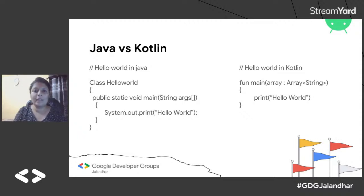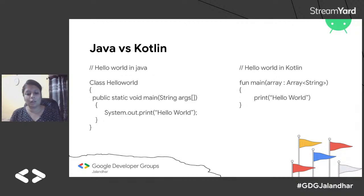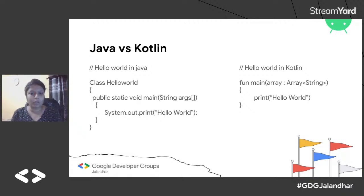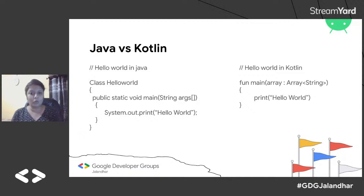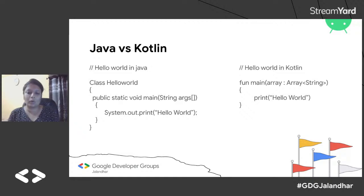This slide shows the difference between Java and Kotlin. In Java, to print just one line on screen, you must create a class, then a public static void main function, and then write your statement — several lines of code just to print 'Hello World.' In Kotlin, you just define one method and print your statement. Kotlin requires far fewer lines of code than Java for the same result.